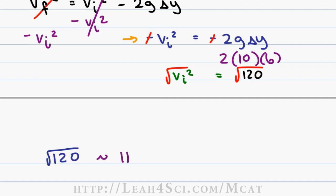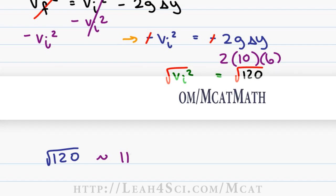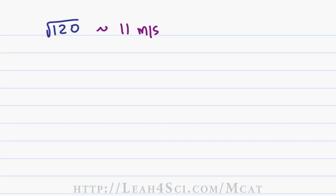If you're not confident with your square root values, grab my math cheat sheet that has a lot of different equations for you to memorize for the MCAT, and you can find this on my website at leah4sci.com/mcatmath. Now that we know that 11 meters per second upwards, so it's positive, is equal to our v initial, we can now use this value to plug into the next equation.